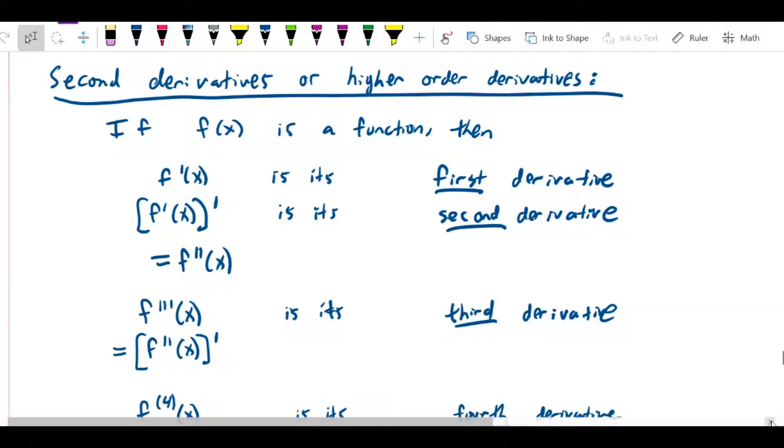There's a notion of second derivatives, or what are also called higher-order derivatives if we go beyond second. This is the concept that since the derivative itself is a function, we can find the derivative of the derivative, which is referred to as the second derivative of the original function.